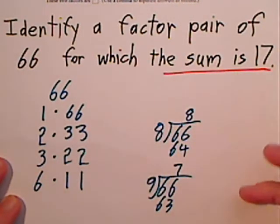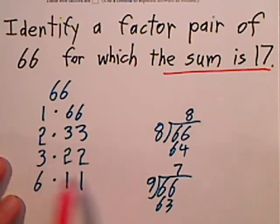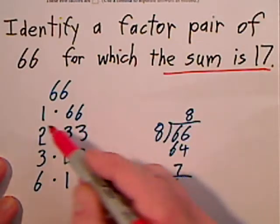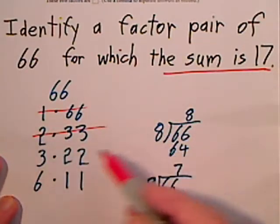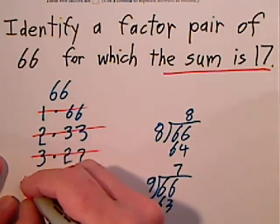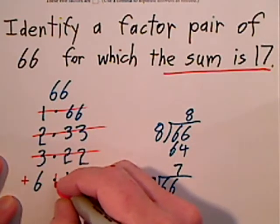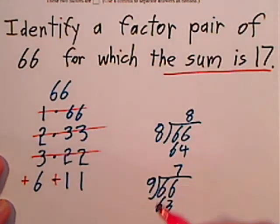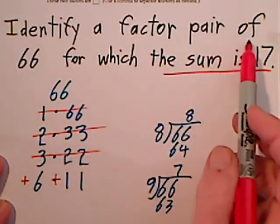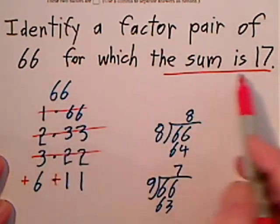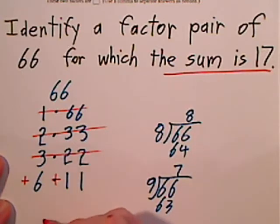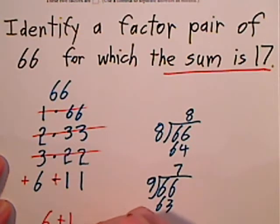For which the sum is 17. That means I'm supposed to add these two together and get 17. That won't work. That won't work. That won't work. But if I had a positive 6 and a positive 11, I would get 17. So the factor pair of 66 for which the sum is 17 is 6 and 11.